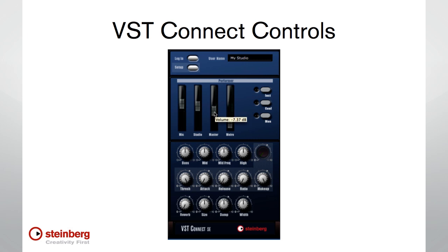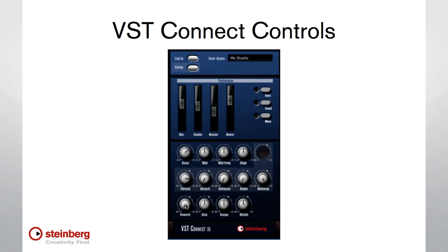Master controls the overall listening level for the performer, and Metro controls the volume of the metronome if it's turned on. The EQ, compressor, and reverb controls are for the performer's monitor mix only. This allows you to improve their listening experience with things like comfort reverb.